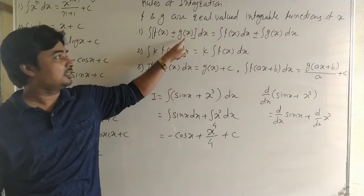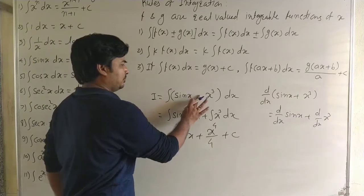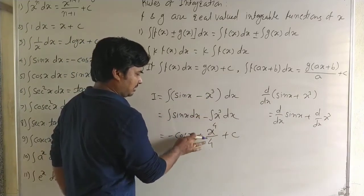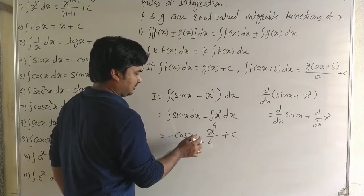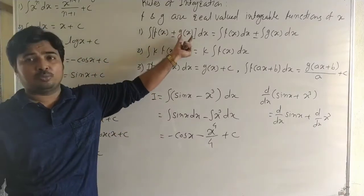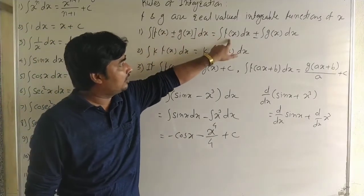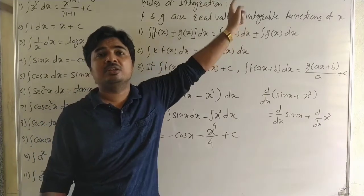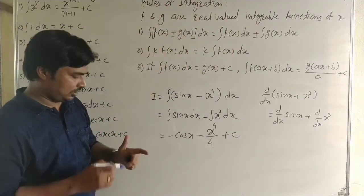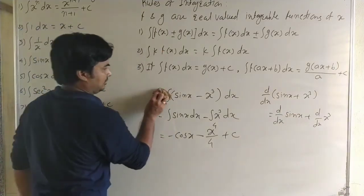If the two functions are in subtraction instead of addition, then similarly we get a minus sign. So the rule is: integral of f(x) ± g(x) = integral of f(x) ± integral of g(x). The second rule is: constant into function.